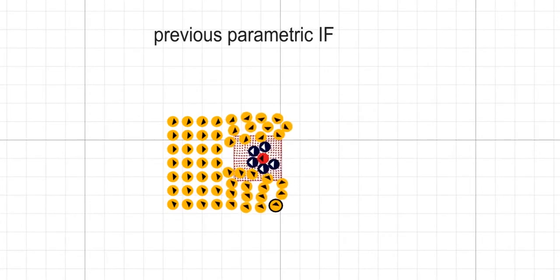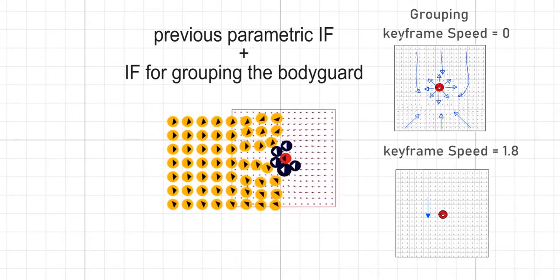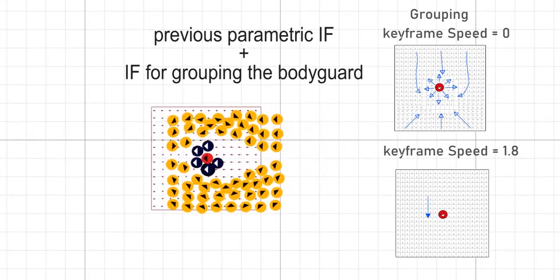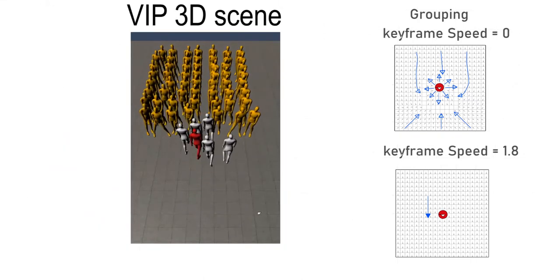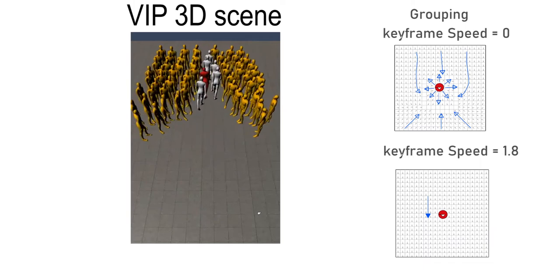Grouping the bodyguards and the VIP can be done by adding a new parametric field based on speed with the VIP as a source. Here you can see the two fields used for the simulation and the resulting 3D scene.